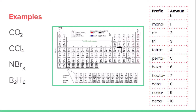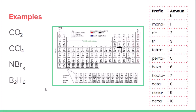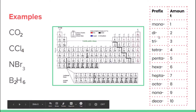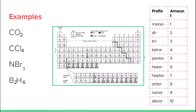For example, carbon and oxygen: there's only one carbon, so no 'mono' — it's just carbon. There are two oxygens, and 'di' is the prefix for two. So the compound is carbon dioxide.